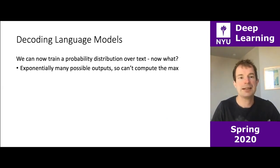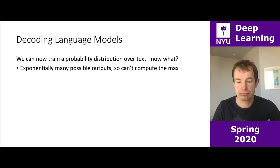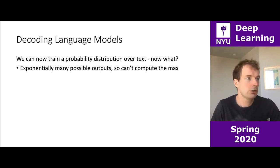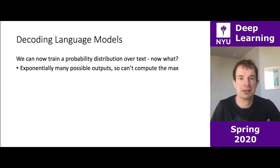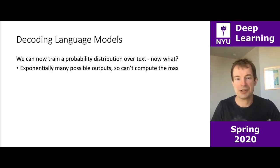Next I want to cover decoding and inference for language models. We've trained this language model that hopefully puts high probability on good English and low probability on grammatical nonsense. But if we want to create samples like I showed you before, how do we actually generate text?